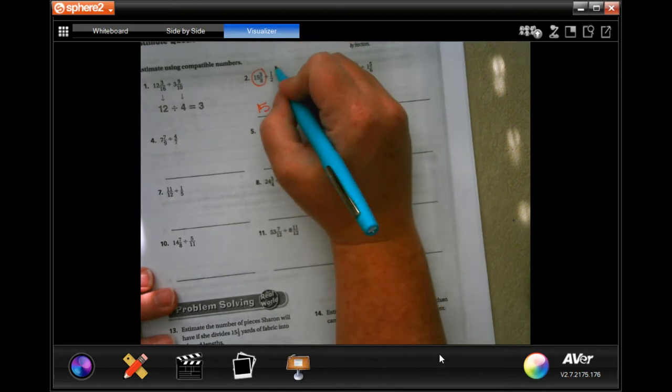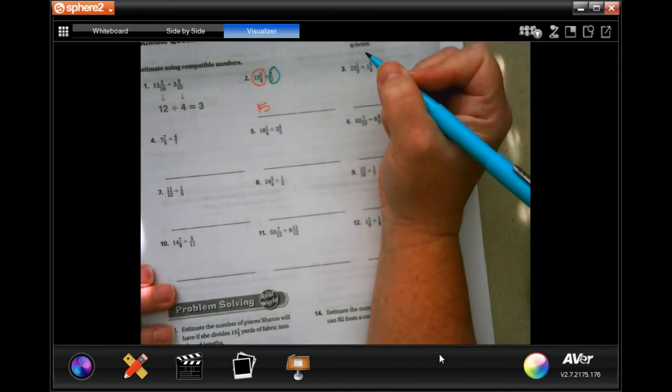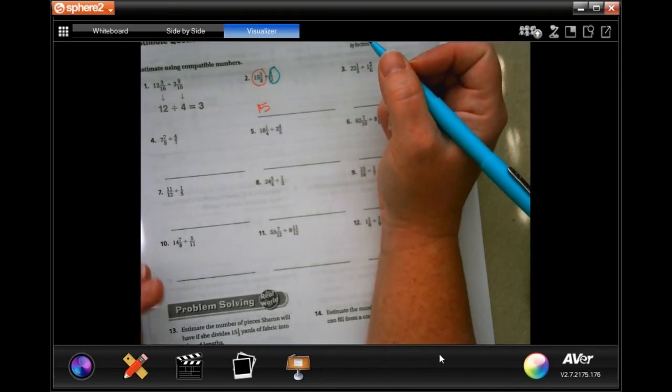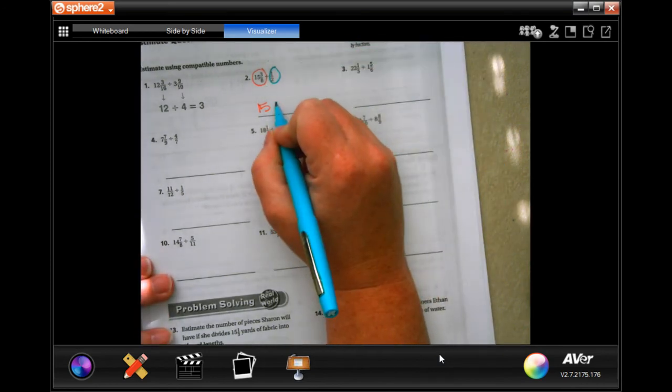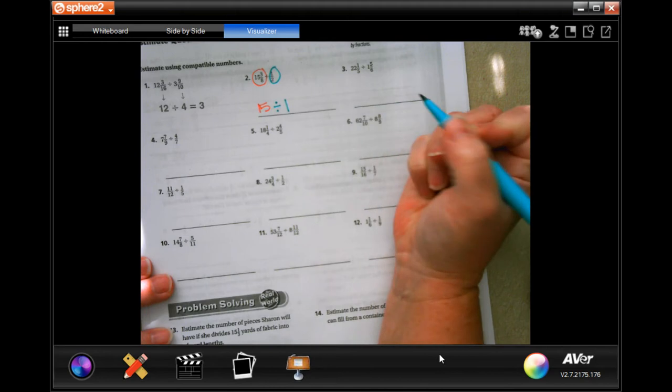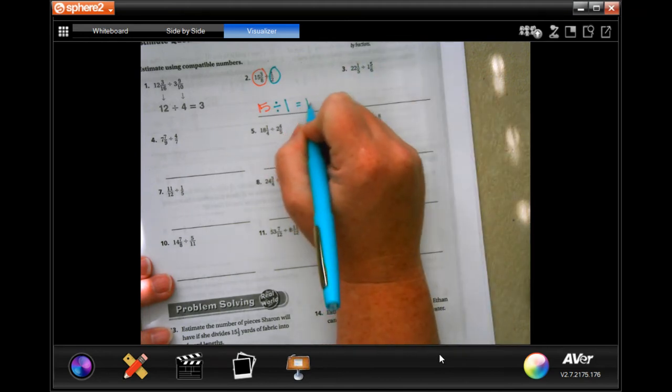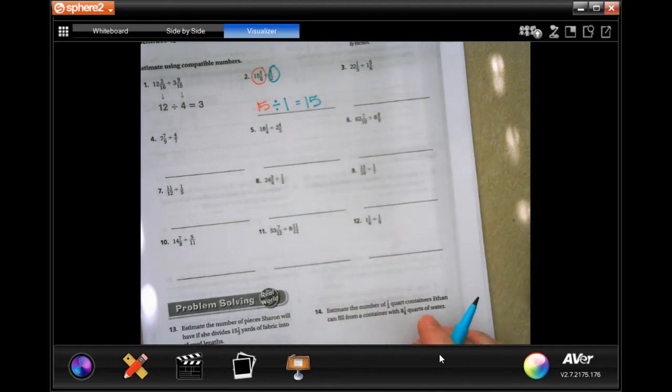Now if we go over to 1 half, 1 half, if it were a decimal, would be 0.5. Well, that's bigger than 5, or 5 or bigger. So we're going to round that to 1. Pretty easy.